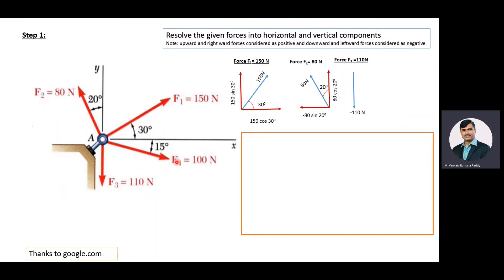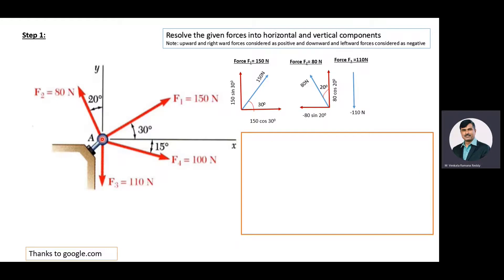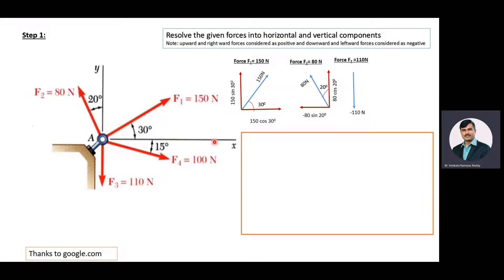Then we will consider F4 force. F4 is equal to 100 newton and this force is making an angle of 15 degrees to the X axis. Its horizontal component becomes 100 cos 15 and the vertical component becomes 100 sin 15. The vertical component is acting vertically downward, that's why it is negative, whereas the horizontal component is directed rightward along the X axis, that's why it is positive.